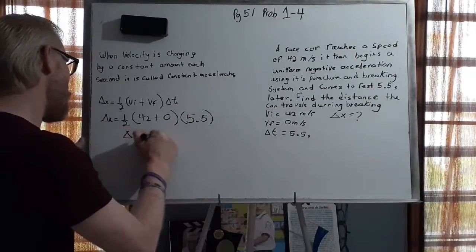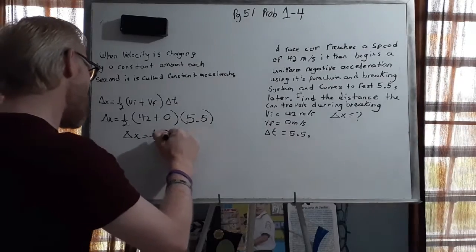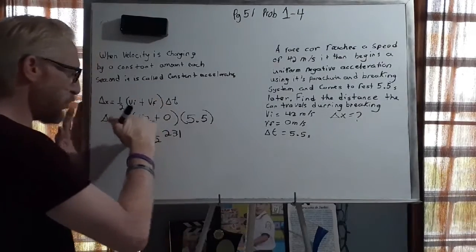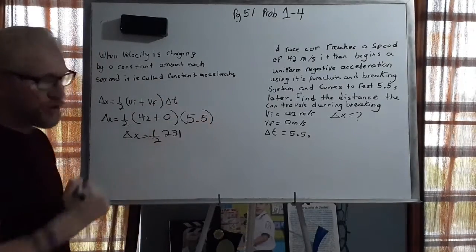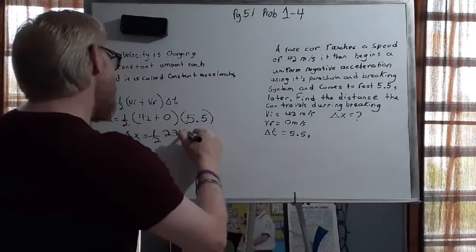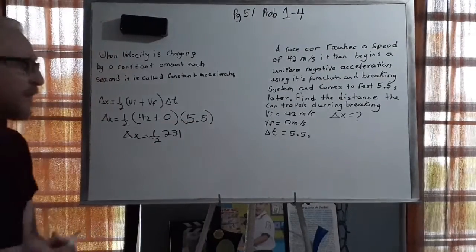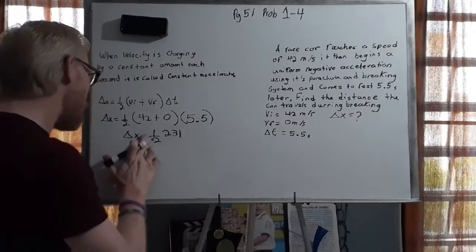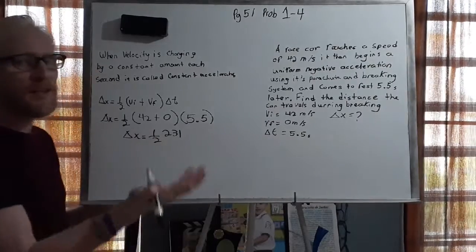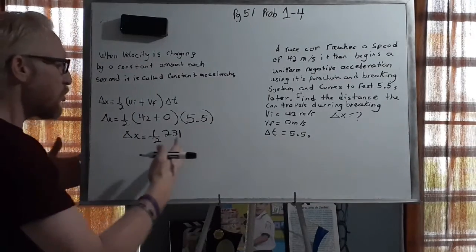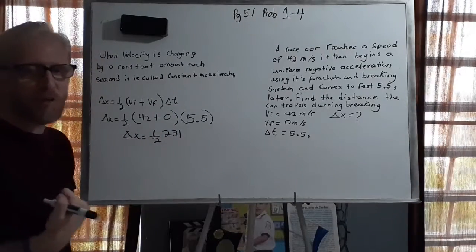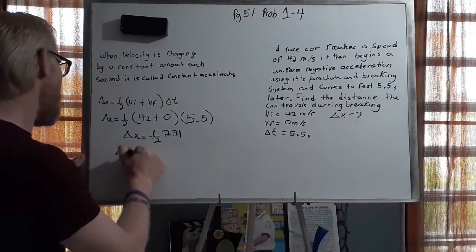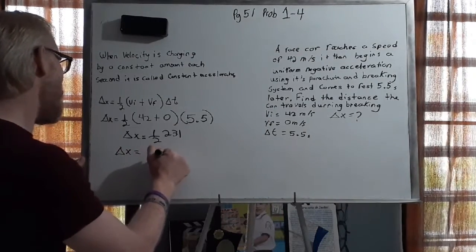So we have that our change in x equals one-half of 231. Again, 42 plus zero is 42, 42 times 5.5 is 231. Of course, what we have here is to find the displacement, what we do now is multiply it by one-half. Now, multiplying it by one-half is actually the same thing as dividing by two. So in your calculator, you can either multiply 231 by 0.5, or you can just divide 231 by 2, which is actually 115.5 meters.